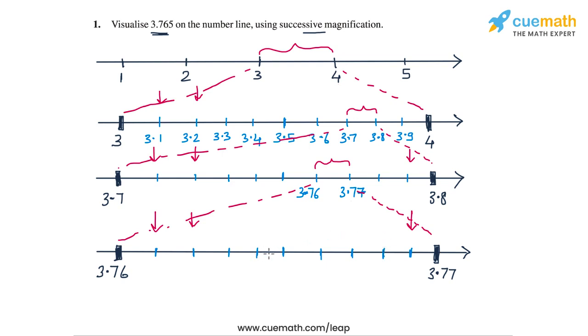So the number 3.765 will be exactly at the fifth marker, this number here, because it lies exactly midway between 3.76 and 3.77. So this marker represents the number 3.765. And so this is how we can visualize 3.765 using successive magnification.